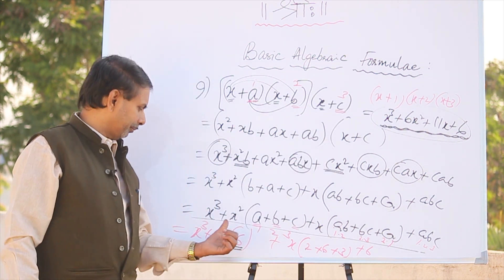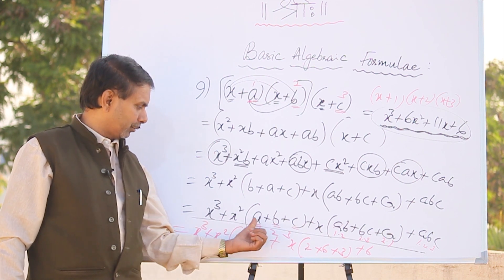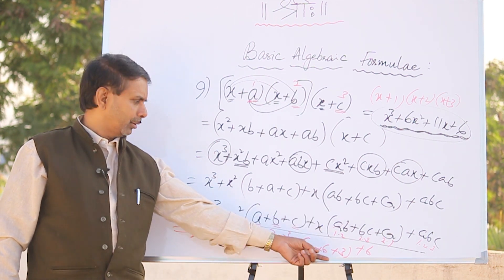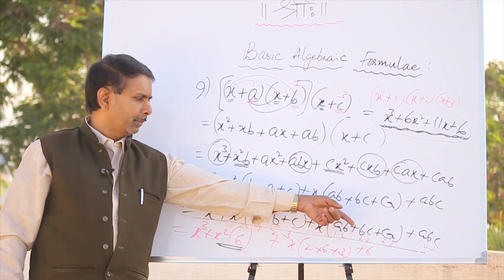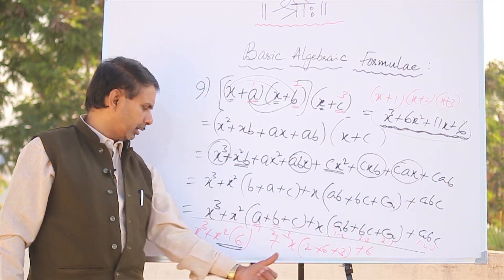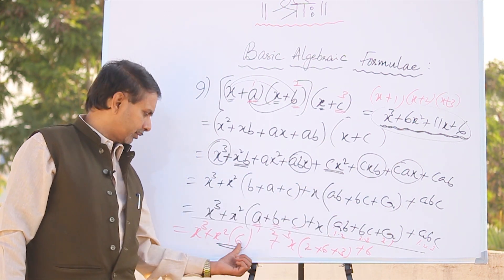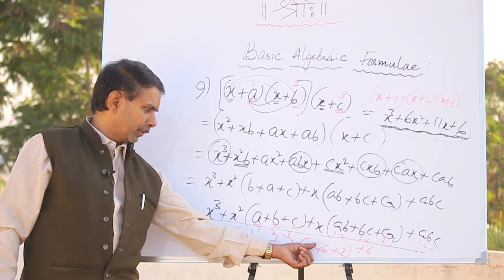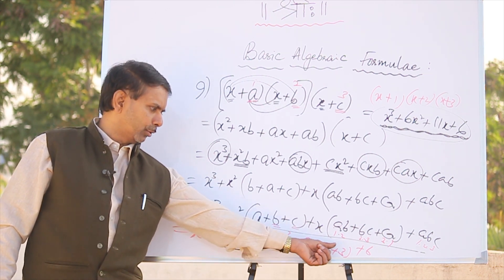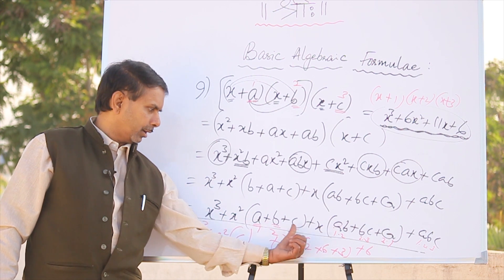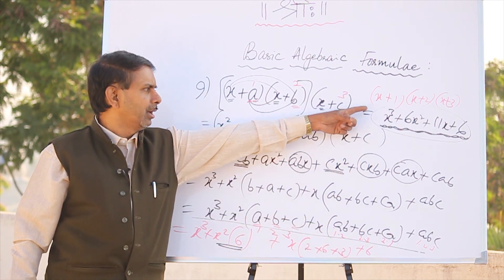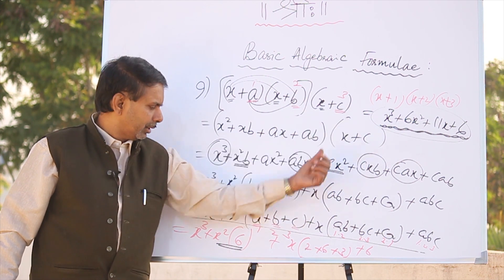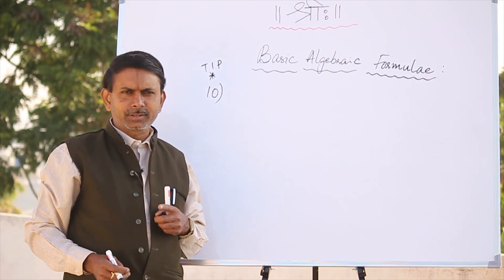You will get x cube plus x square into 1 plus 2 plus 3, plus x into 1 into 2 plus 2 into 3 plus 3 into 1, plus 1 into 2 into 3. That gives x cube plus 6x square plus x into 2 plus 6 plus 3, which is 11x, plus 6. That's why x cube plus 6x square plus 11x plus 6.